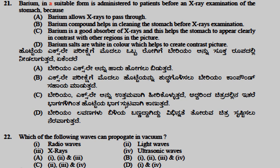The correct sequence of stages a bill passes through before becoming an act is: getting published in the official gazette, reference to joint committee, admitting amendment, and presidential assent. Barium in a suitable form is administered to a patient before an X-ray examination of the stomach because barium is a good absorber of X-rays, which helps the stomach appear clear in contrast with other regions.